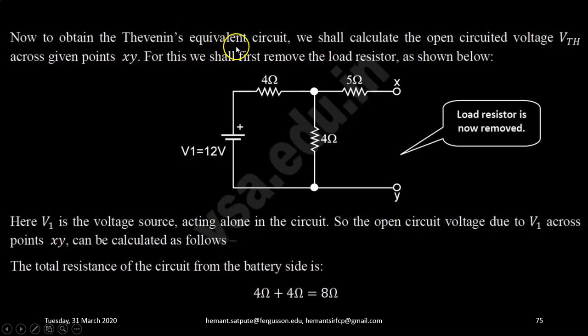Now to obtain Thevenin's equivalent circuit, we shall calculate the open circuited voltage VTH across the points X and Y. For this we shall first remove the load resistance as shown. So load resistance which has 5 ohm that is removed and now the circuit will look like this. Here V1 is the voltage source acting alone in the circuit. So open circuit voltage due to V1 across points X and Y will be calculated as follows.